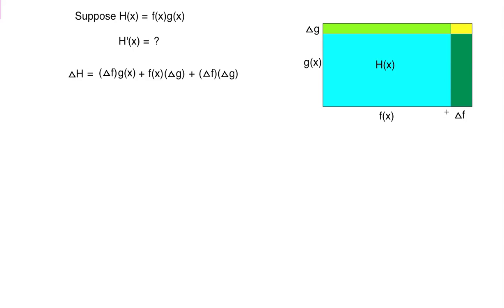Here on the right, the dark green one is the change in f times the original amount of g. That's this change in f times the original amount of g. And here the light green one on the top, it's the change in g times the original amount of f. That's this term here, f times delta g. And then in the corner, we've got the yellow one. That's the rectangle is the change in f times the change in g.